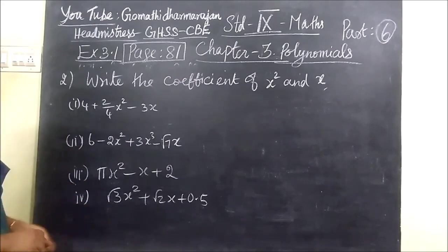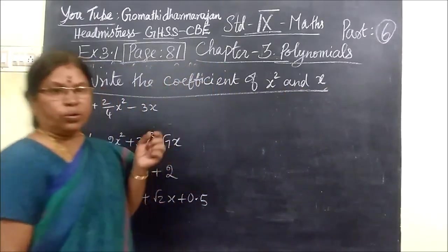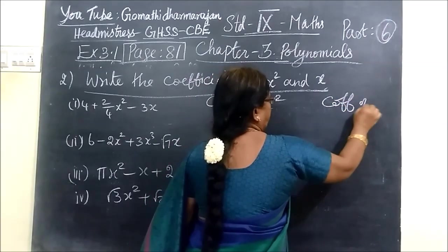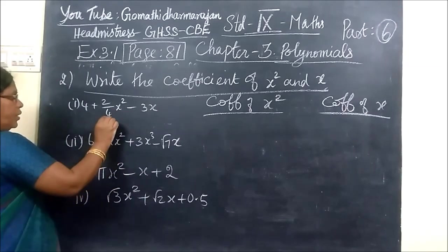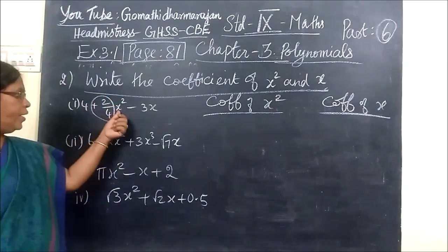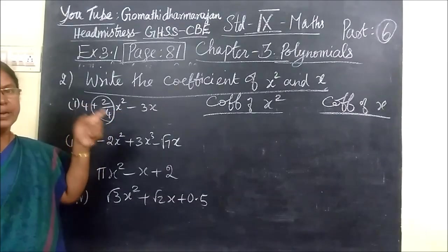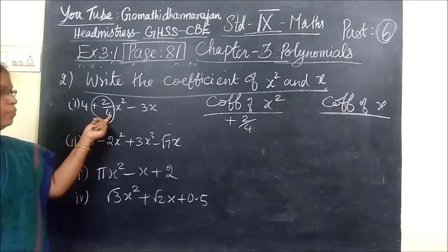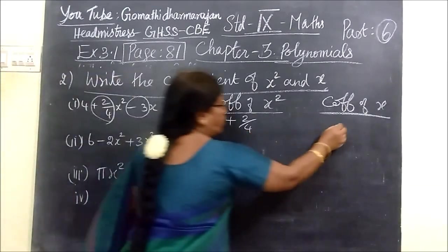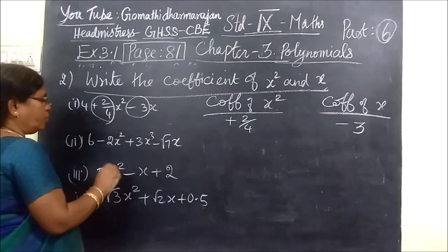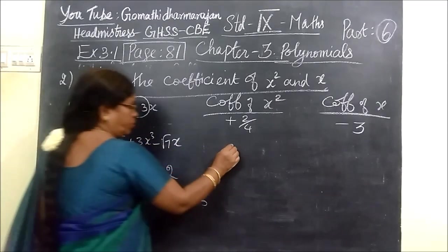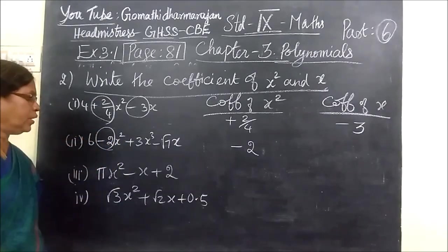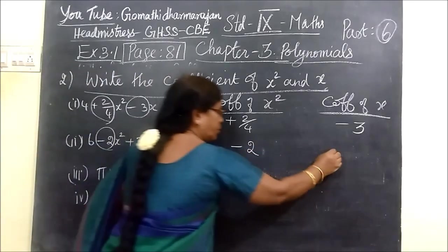Now you see the second exercise: write the coefficient of x squared and x. Here, the coefficient of x squared is 2 by 4. The number next to the variable is the coefficient. With a plus sign, no need to write the sign — just write 2 by 4. The coefficient of x is written with its sign. If it is minus, you must write it. Here, the coefficient of x squared is minus 2. The coefficient of x is minus root 7.